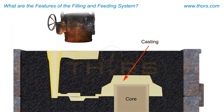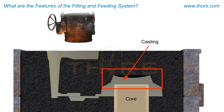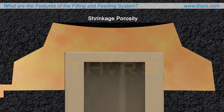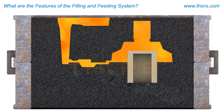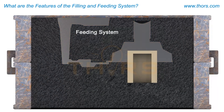Once the casting cavity is filled completely, the metal begins to solidify. As the molten metal solidifies, it undergoes a volumetric reduction, resulting in shrinkage porosity. Shrinkage porosity manifests itself as depressions on the surface of the casting or as voids inside the casting. To prevent shrinkage porosity, a feeding system is devised. This feeding system is also known as the risering system.